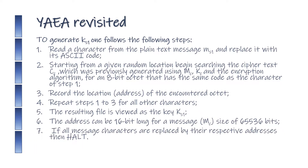YAEA Revisited — To generate KS1, follow these steps: (1) Read a character from the plaintext message MS1 and replace it with its ASCII code. (2) Starting from a given random location, begin searching the ciphertext CC — previously generated using MC, KC, and the encryption algorithm — for an 8-bit octet that has the same code as the character from step 1. (3) Record the location (address) of the encountered octet. (4) Repeat steps 1 to 3 for all other characters.